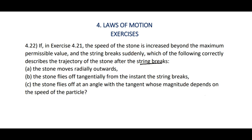The stone flies off at an angle with the tangent whose magnitude depends upon the speed of the particle. The stone is traveling in a circular path. Centripetal acceleration is towards the center. At this instant, the direction of the velocity of the stone is tangential. When the string breaks, definitely the stone flies off tangentially from the instant the string breaks, due to inertia.